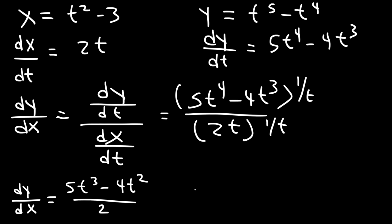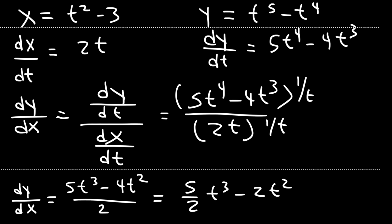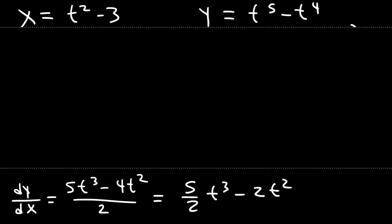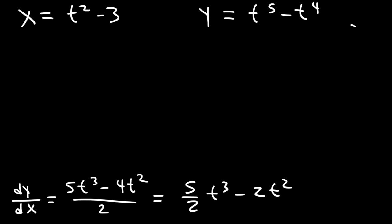And if you want to, you can separate it into two fractions. So we could say it's 5/2 times t to the third, and 4 over 2 is 2, so minus 2t squared. Keep in mind that dx/dt is 2t — we're going to need that later.